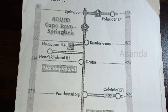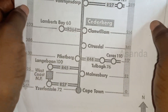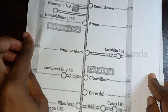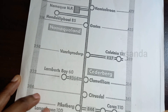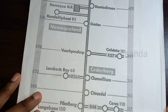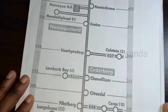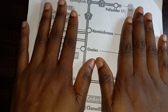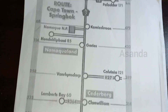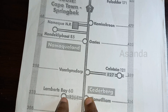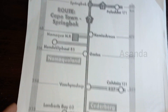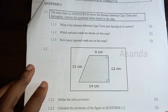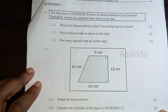Before we attempt the questions, I want to point out that when you get a map there are certain things to look for. First, the direction of north — this one has north facing up. Second, does it have a scale? This one does not have a scale. Third, does it have a key? A key tells us what symbols mean — again, this one does not have a key, so we'll move on.